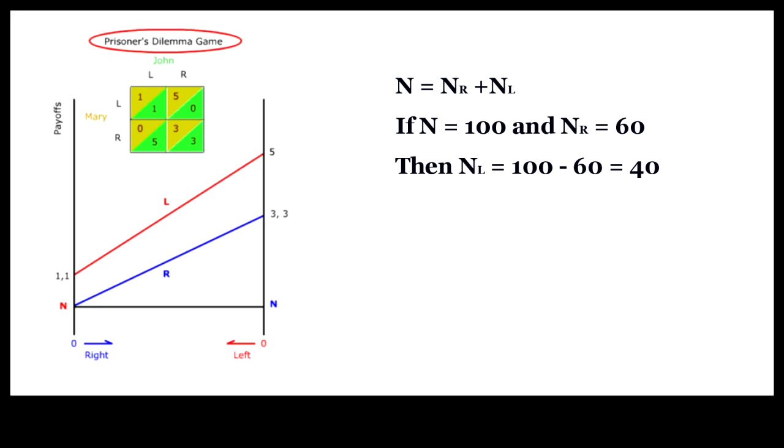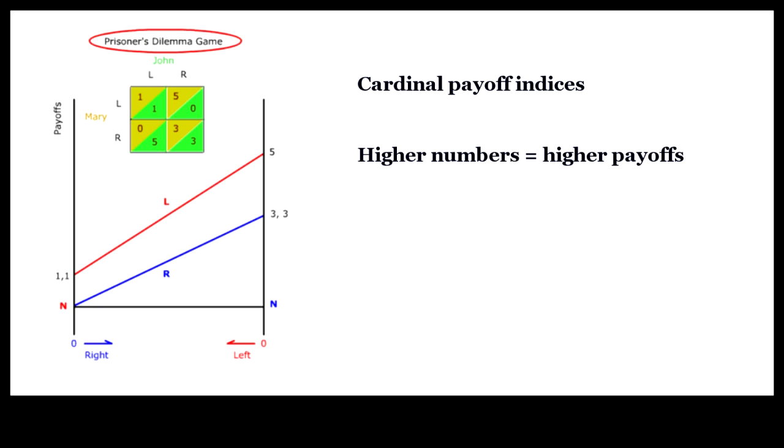The payoff for choosing R increases as more people choose R. And the payoff for choosing L decreases as more people choose L. The endpoints of these payoff curves represent the cardinal payoff indexes. The payoff curves assume that each person making the same choice has the same average payoff.